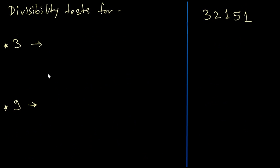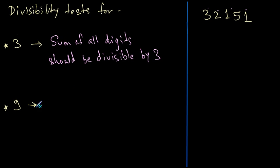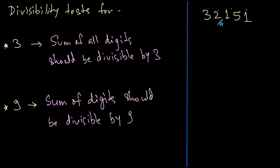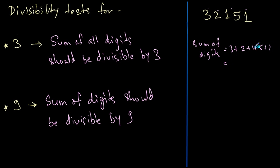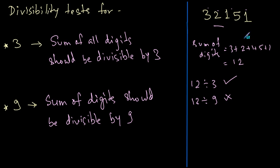Let's move on to 3 and 9. The divisibility test for 3 is that the sum of all digits of the number should be divisible by 3. Similarly, for 9, the sum of all digits should be divisible by 9. The sum of digits is 3+2+1+5+1 = 12. Since 12 is divisible by 3 but not by 9, this number is divisible by 3 but not by 9.